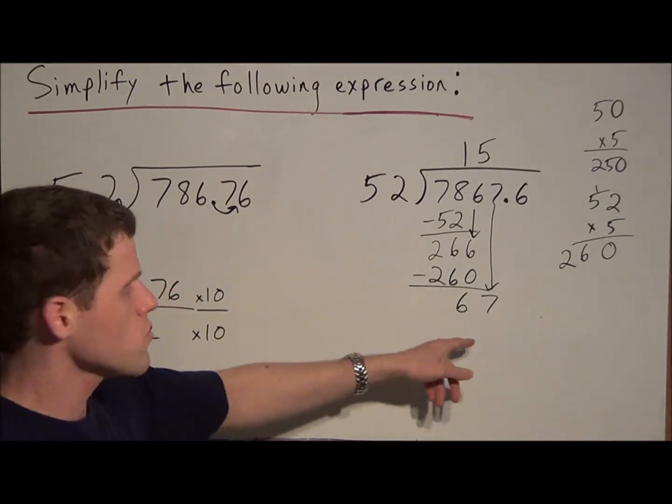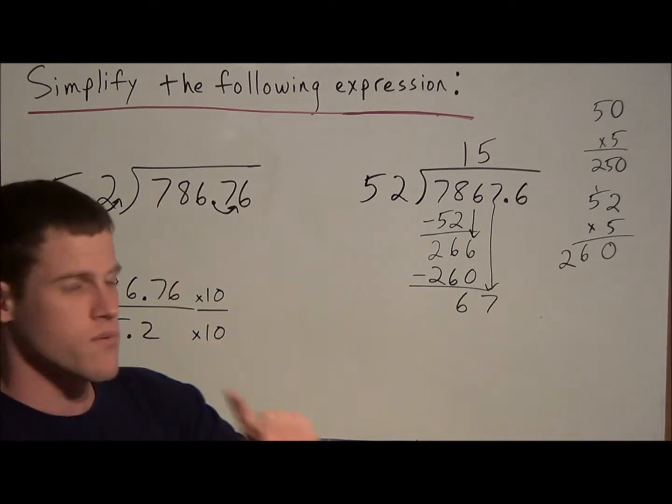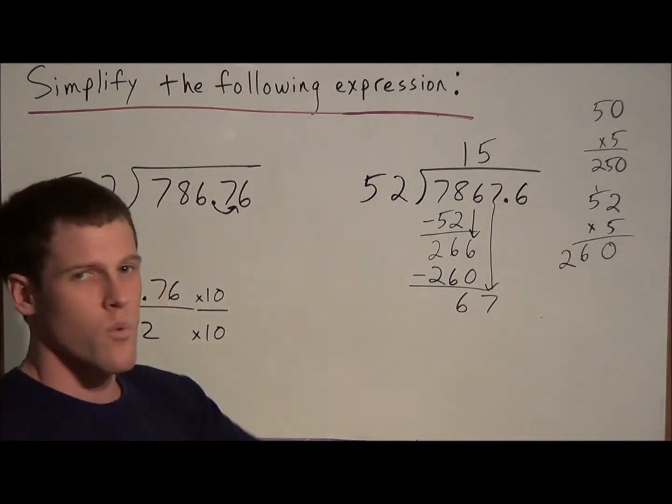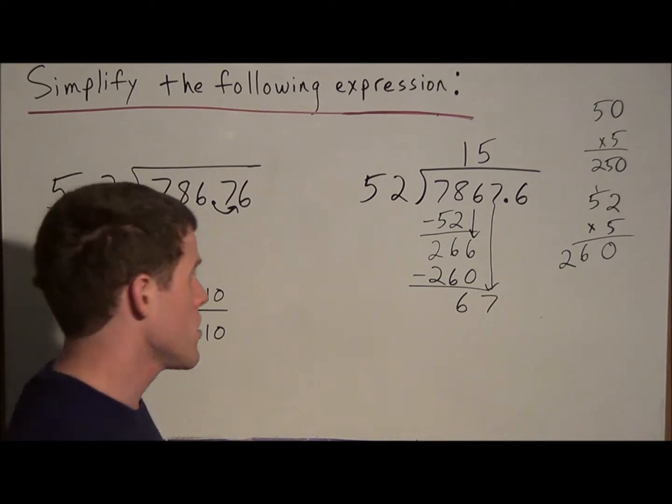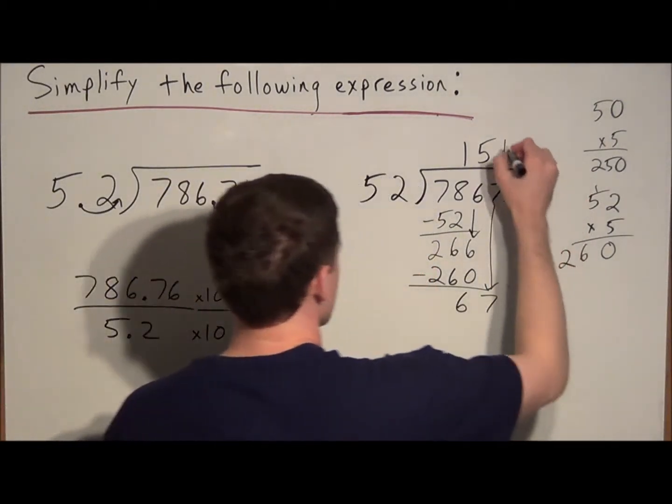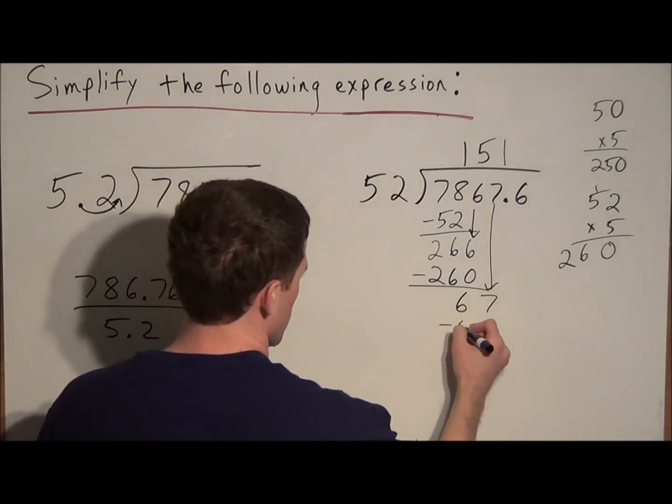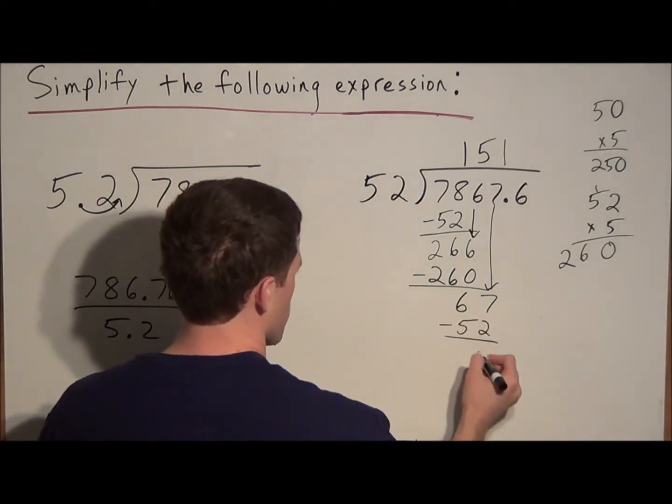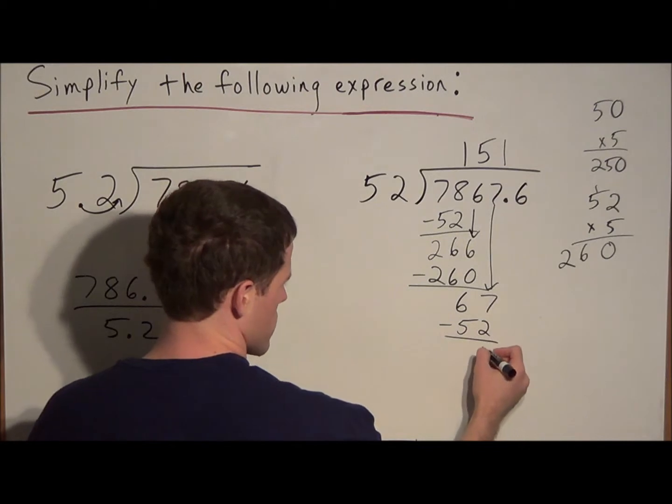But now estimating, 52 will go into 67 only once, because if we went twice, it would bring us to 104, which would go past 67. So our next number we're writing up top is 1. Okay? And if we do 1 times 52, we get 52. And the remainder is going to be 7 minus 2 is 5, 6 minus 5 is 1.